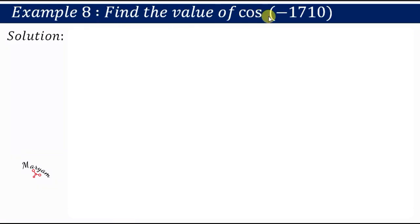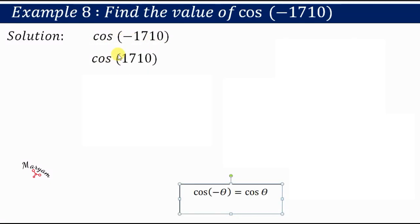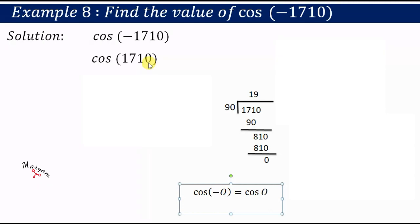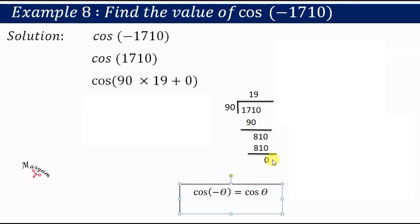Example 8: find the value of cos(−1710°). cos(−1710°) can be written as cos(1710°) because cos(−θ) = cos θ. For cos(1710°), we divide 1710 by 90. We get quotient 19 and remainder 0. So 1710 = 90 × 19 + 0. This is the 19th quadrant.